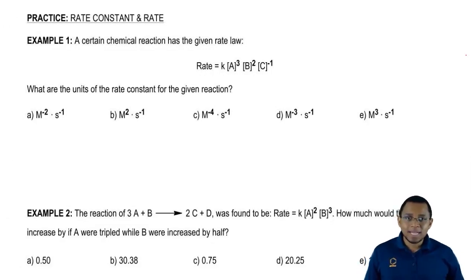They're asking us to find the units for rate constant K. All you need to realize here is that when it comes to figuring out the units for K, just use this simple equation. K equals the molarity to the negative n plus 1 times time inverse.